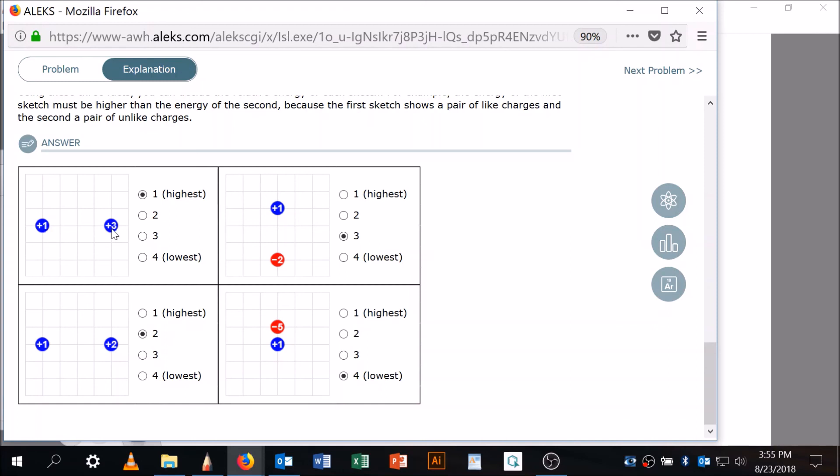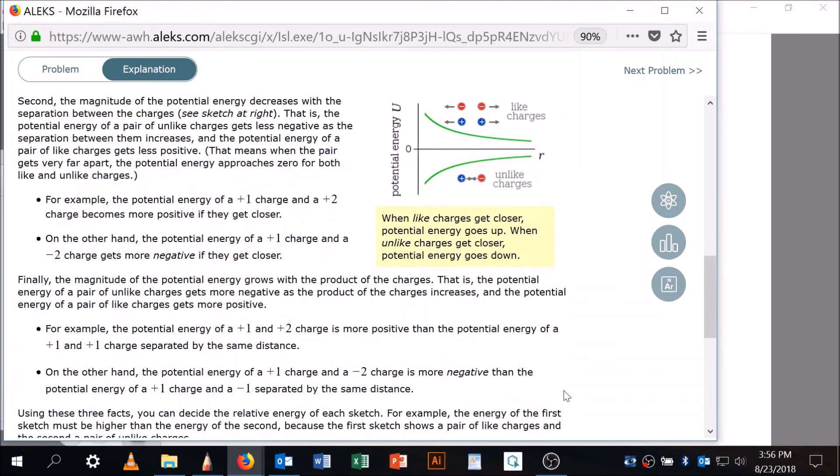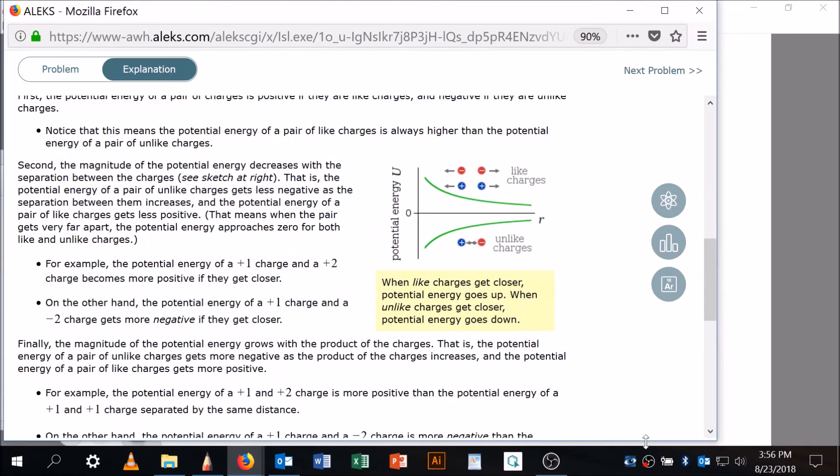That's going to be the highest energy because they're like charges, and they don't want to be close. And they're four units away. So, that's going to be the highest, and this is the next highest because it's also repulsive force. That's a little bit long, a little bit wordy. Go back through and read this explanation again, and then practice some more, and then bring your questions back to me.